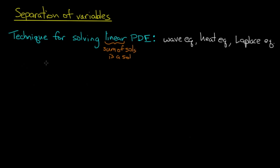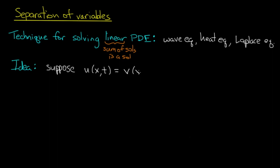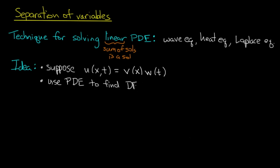What's the big idea behind separation of variables? The idea is to make the search for solutions to our PDE easier, and we do that by supposing that solutions have a special form. We suppose that our solution u is a product of two functions — a function of x alone and a function of t alone. With this assumption, we use the original PDE to find ordinary differential equations that v and w satisfy, hoping they're easier to solve.